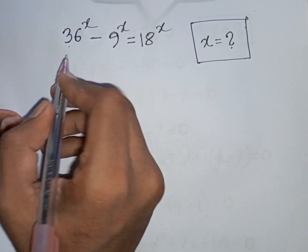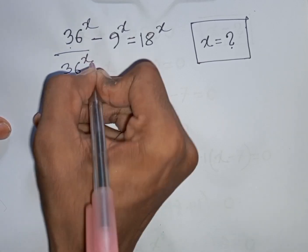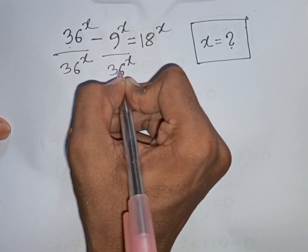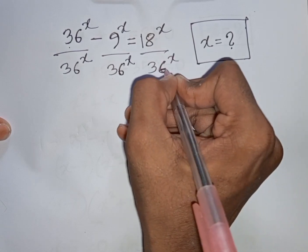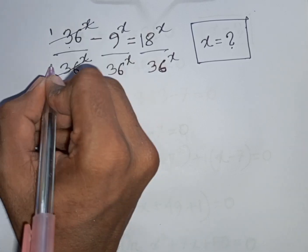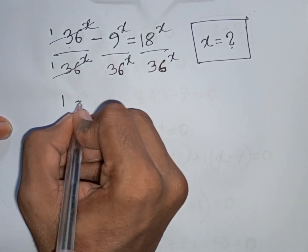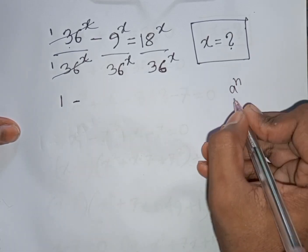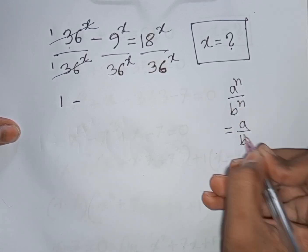First, we divide by 36 power x on both sides. So, dividing by 36 power x — this will cancel. Same power but different base. According to the exponential rule, a power n divided by b power n is equal to (a/b) to the power n.